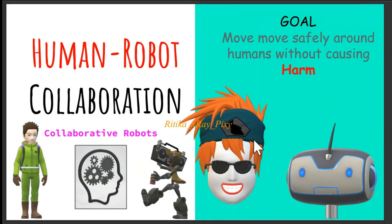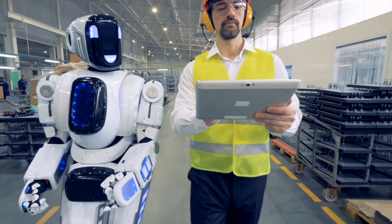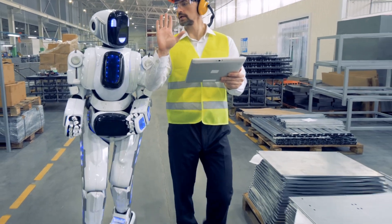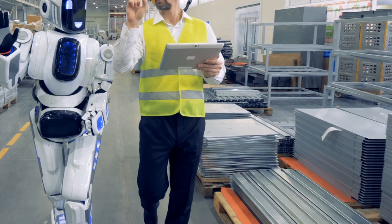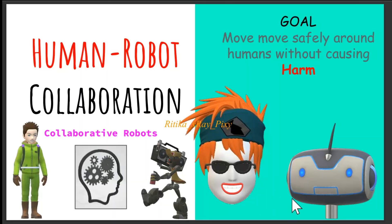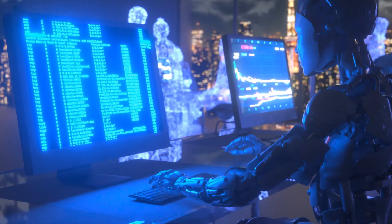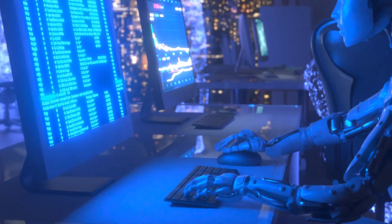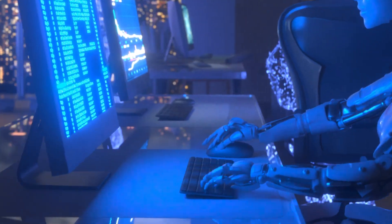In human-robot collaboration, proper path planning ensures the robot moves safely around humans without causing harm or disturbing human tasks. The robot needs to focus only on its task without causing any kind of harm to humans or its surroundings. To perform specific tasks or move in any environment, we can use different search algorithms and modern techniques like machine learning to find the shortest and most efficient path.